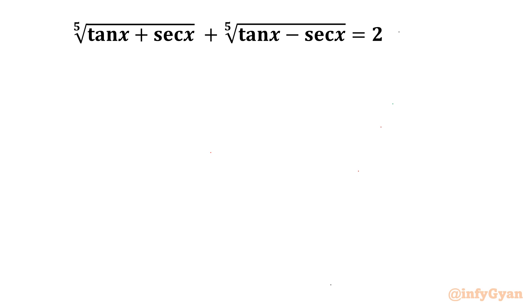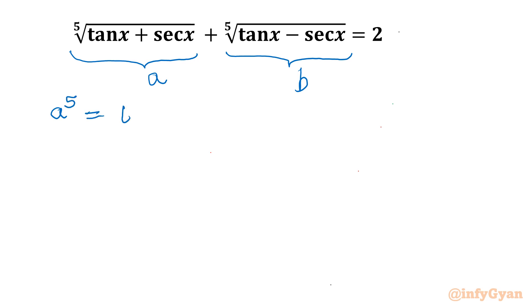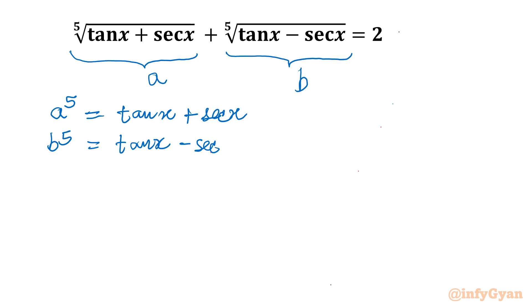I will assume the first 5th root equals A, and the second 5th root equals B. So I can write: A⁵ = 10x + sec x, and B⁵ = 10x − sec x. Now I will add both equations: A⁵ + B⁵ = 2 tan x, since the sec x terms cancel.